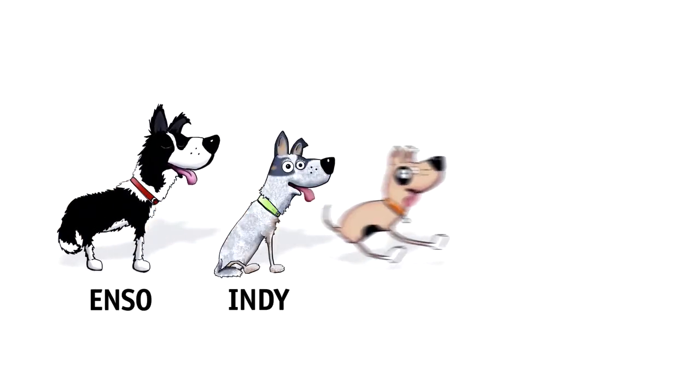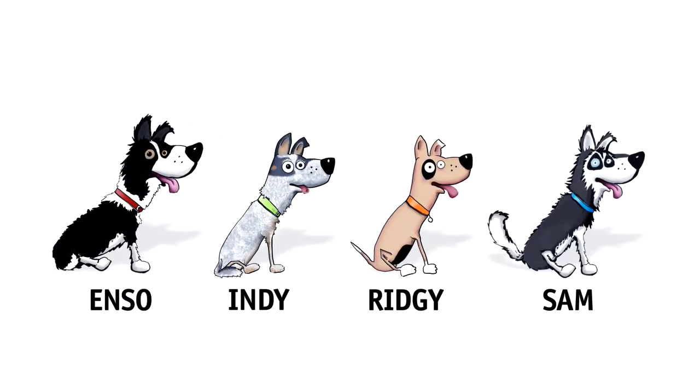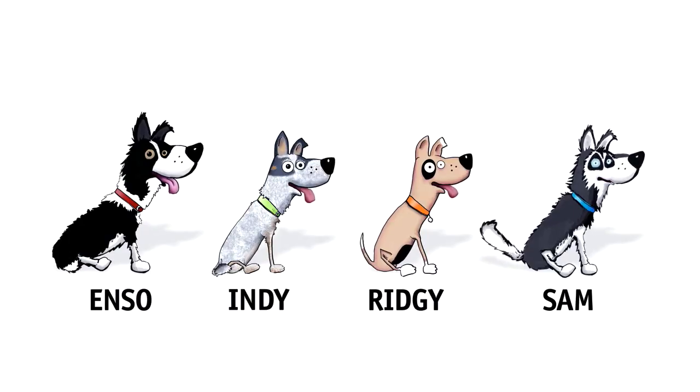This is Enso, Indy, Ridgey and Sam. They represent four climate processes that affect our rainfall variability across Victoria. These four sheepdogs love rounding up our rainfall.